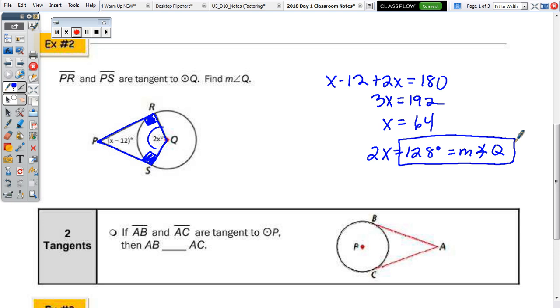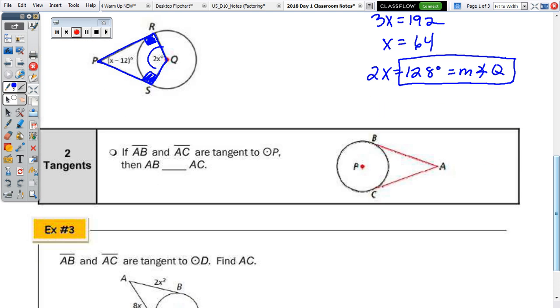The next theorem. So, there are a lot of theorems within the circle unit. So, the next one says that if AB and AC are tangent to circle P, is there a radius drawn? No, you can draw the radius.